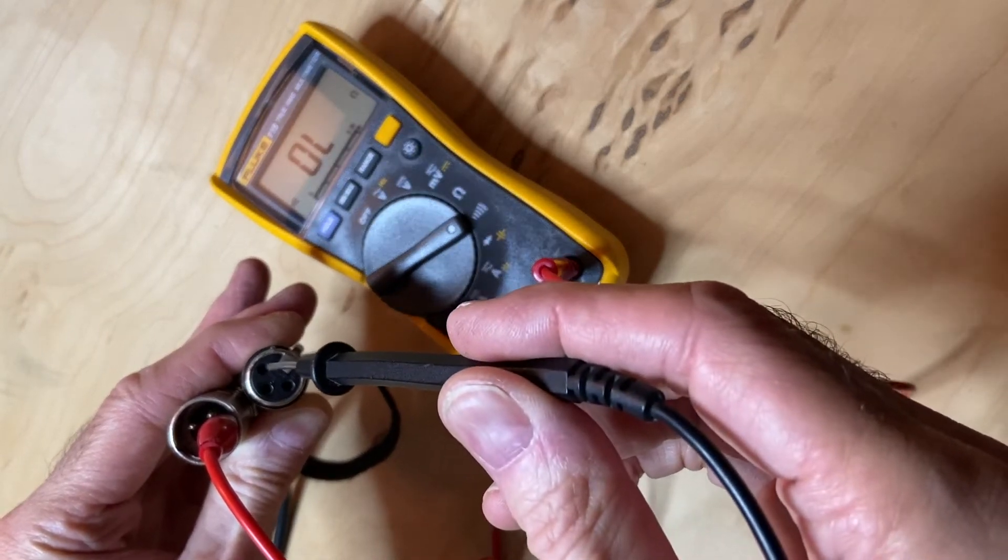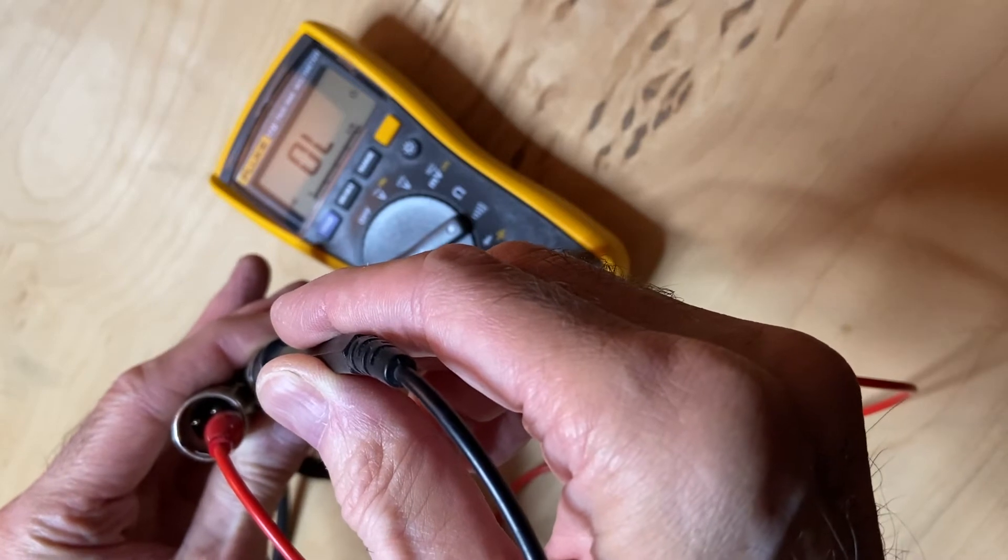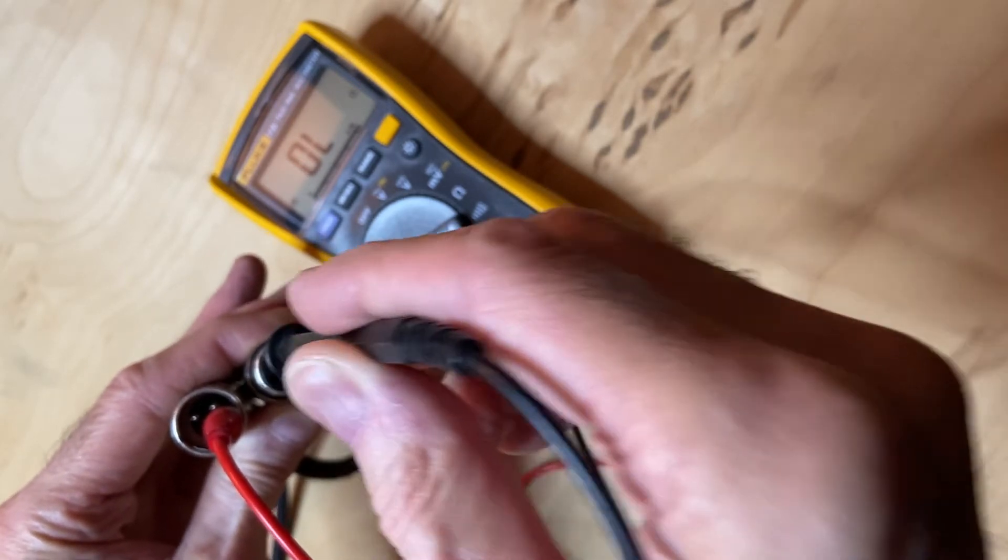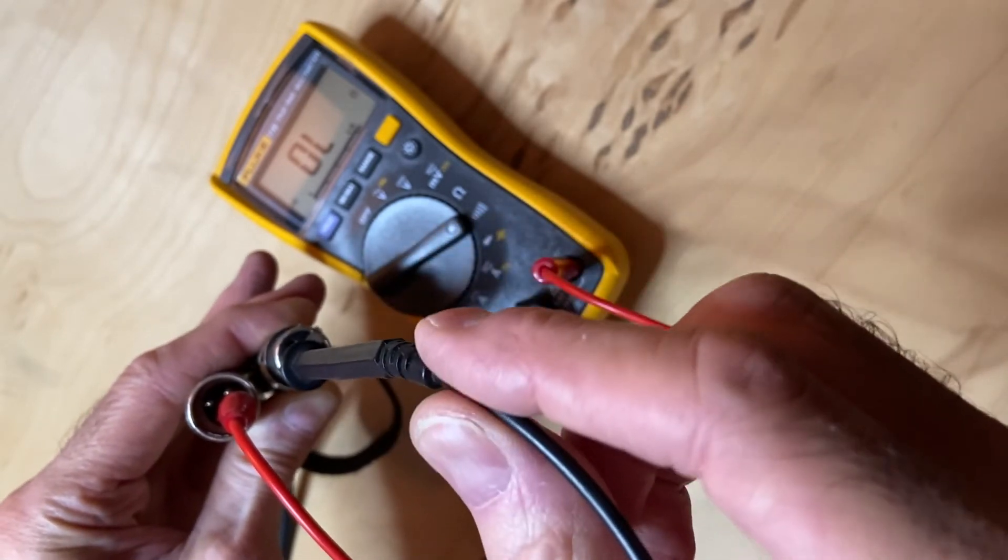I'll take the probe and put it into the hole for pin 2 and we shouldn't hear anything. That means there's no short between pins 1 and 2. Then I'll move the probe over to pin 3 and we have no continuity. Again, good.